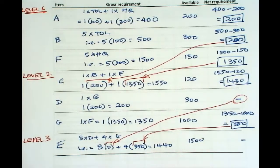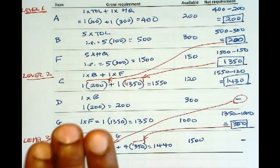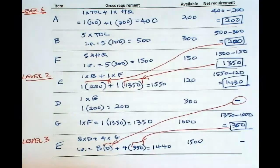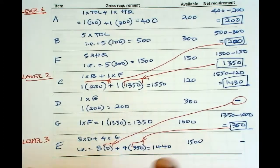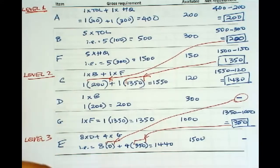This problem illustrates the concept of finding the gross requirement from the parent, and then taking out the available inventory, so the remaining is your net. Now this is not the MRP. This illustrates part of the computations involving MRP. MRP would be one where you will also incorporate the lead time. So that is what we are going to do in the next problem.